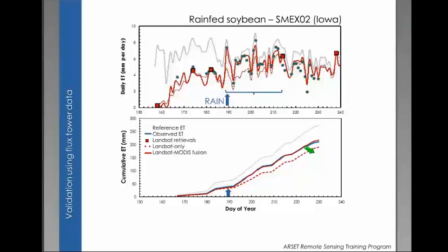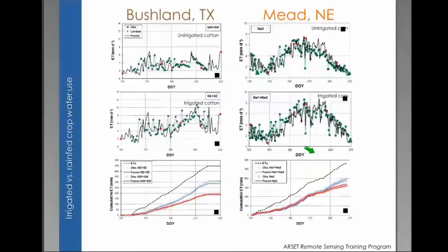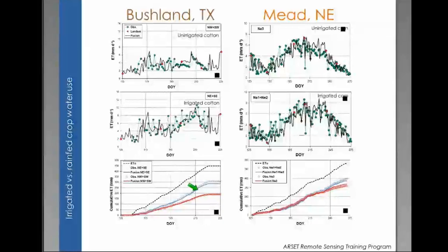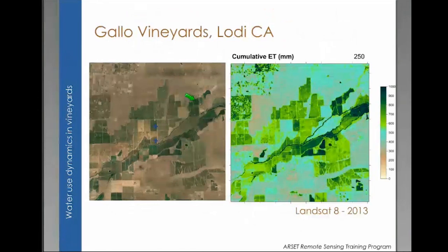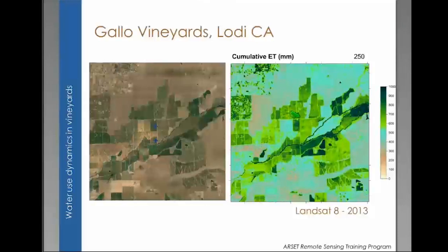A couple more examples from Bushland, Texas, and Mead show good agreement between the data fusion approach and observations — for an un-irrigated cornfield, an irrigated cornfield at Mead, and then un-irrigated and irrigated cotton. We're able to represent through the thermal observations the difference in consumptive water use across these different fields. Martha and her team have also been working with a winery at Gallo in California, monitoring consumptive water use from vineyards. The cumulative DisALEXI evapotranspiration maps show a lot of heterogeneity across fields — older fields tend to use more water and younger fields tend to use less.